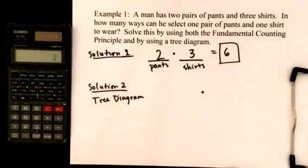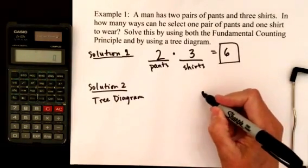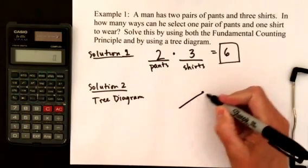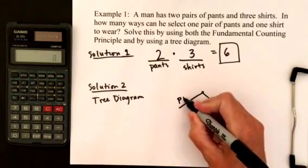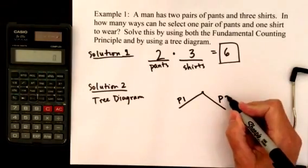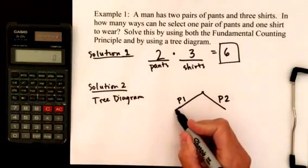So I put a little dot, and he's looking in his closet. And he's going to make his selection on the pair of pants. He has two selections, so we'll go two branches. And I'm going to say the first one is P number one. The second one is P number two, for pants number one and pants number two.